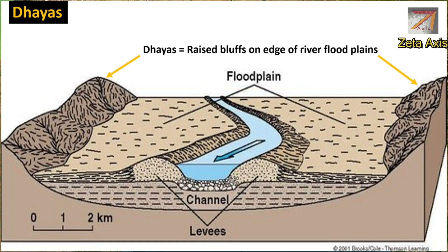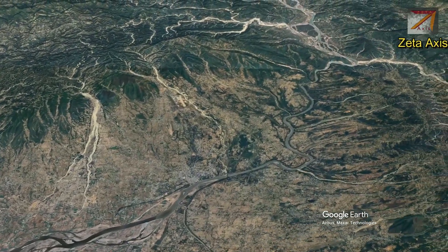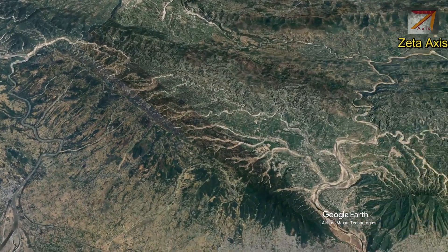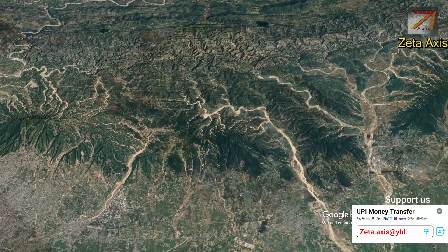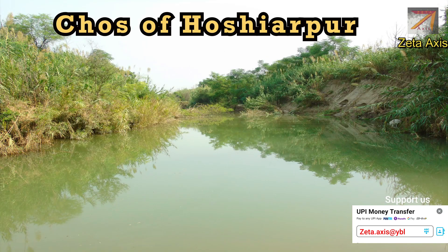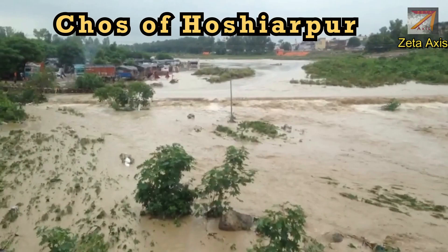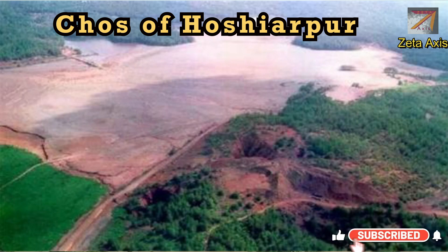The next important feature of the Punjab Plains is Chos. From the Shivaliks, a large number of river streams flow into the Punjab Plains, causing very heavy erosion. These river streams are called Chos. The Chos are seasonal — they remain flooded during monsoon while dry during summer and winter seasons.